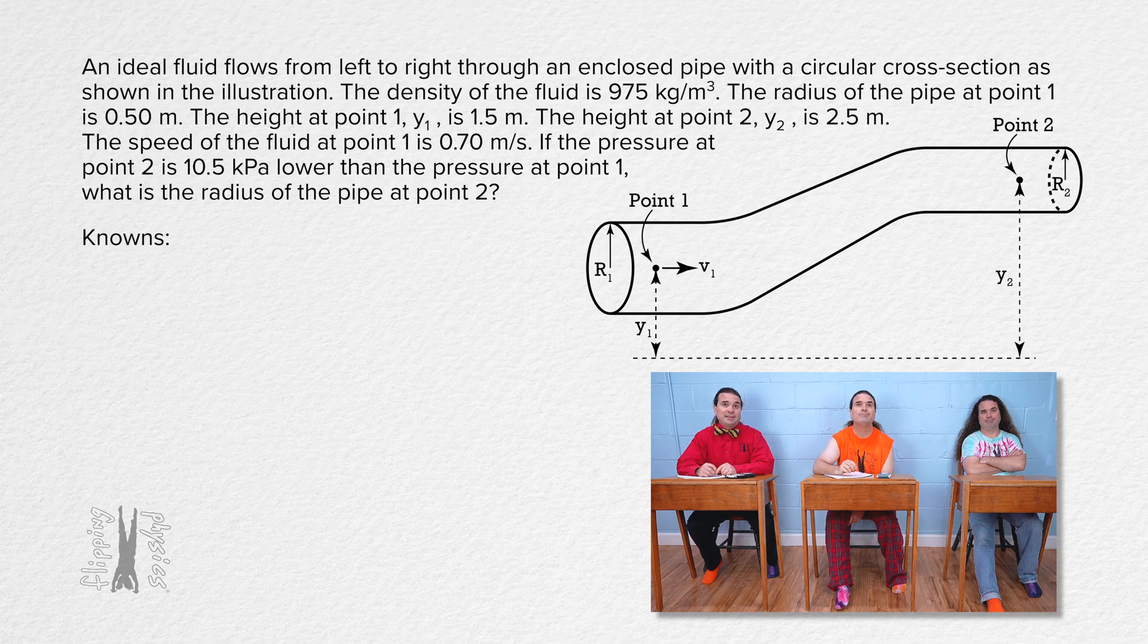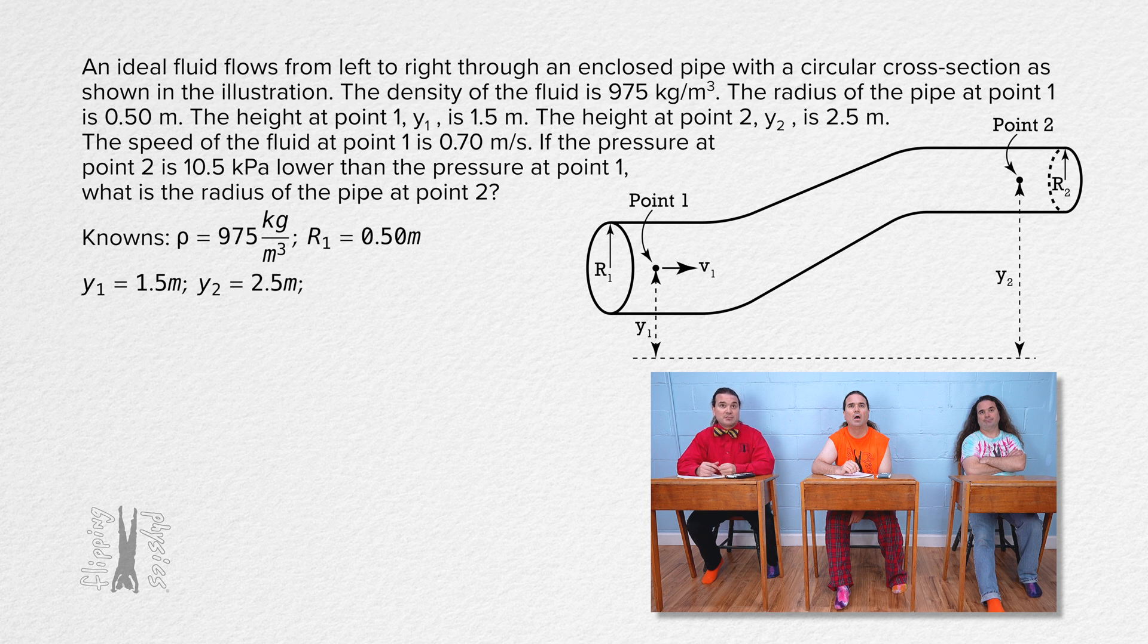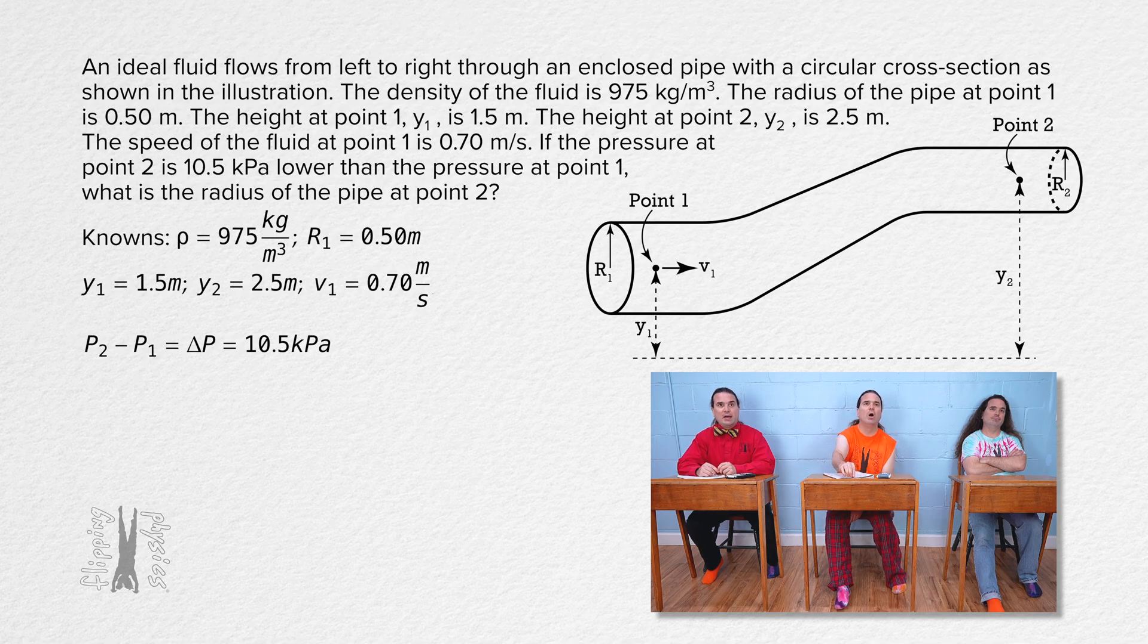Okay, our known values are: the density of the fluid is 975 kilograms per meter cubed, the radius at point 1 is 0.50 meters, the height at point 1 is 1.5 meters, the height at point 2 is 2.5 meters, the speed at point 1 is 0.70 meters per second. And the pressure, well, that number they gave us of 10.5 kilopascals is actually a difference in pressure. So, pressure 2 minus pressure 1, or delta P,